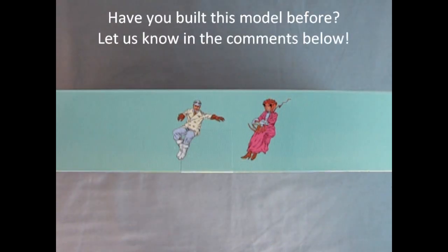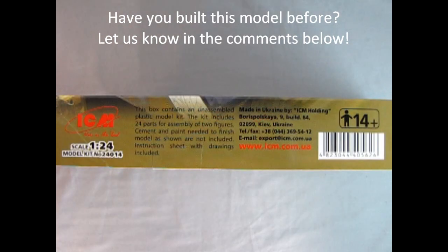The top of the box shows our two figures in a smaller size. You can see the man with the white coat and the blue pants and the woman with the pink dress. ICM gives us this wonderful model in 1/24th scale. For ages 14 up, you will need paint and glue to get it all built. So now we'll take the lid off the box.